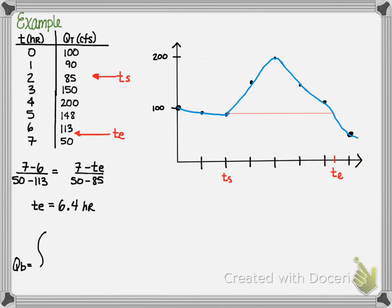Next, we need to construct the base flow equations. The following shows you the actual equation for this example. Q base flow is equal to the total flow rate when T is less than two hours. Q base flow is equal to 85 when T is between 2 and 6.4 hours. And base flow is equal to the total discharge again when T is greater than 6.4 hours.